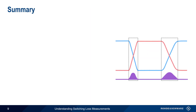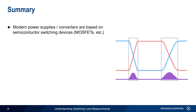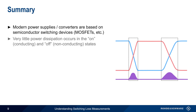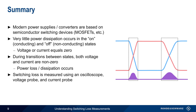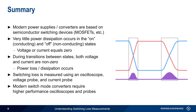In summary, most modern power supplies or converters are based on semiconductor switching devices such as MOSFETs or IGBTs. When in their fully ON or fully OFF states, these devices dissipate very little power, since either current or voltage is near zero. However, during the transitions between states, both current and voltage are non-zero, and hence power will be dissipated or lost within the switching device. This switching loss can be measured using an oscilloscope, a voltage probe, and a current probe. Because modern technologies such as wide band gap materials have enabled higher switching speeds, this also places greater requirements on both the oscilloscope and the probes used for making switching loss measurements.